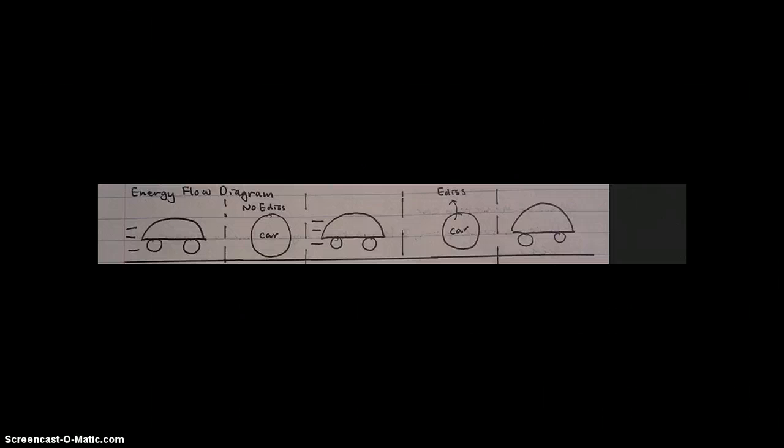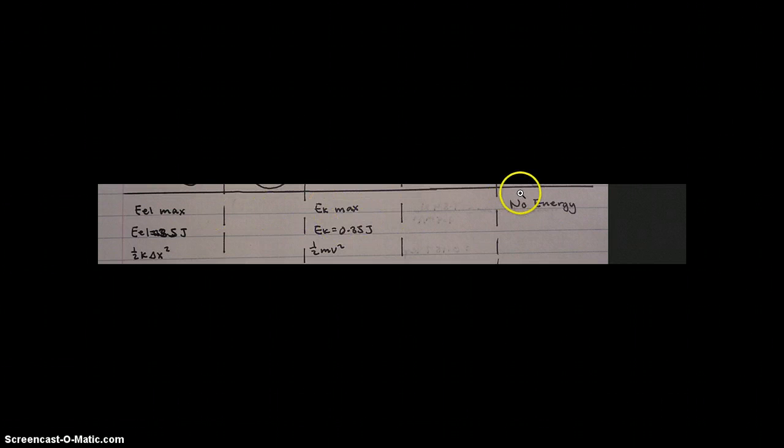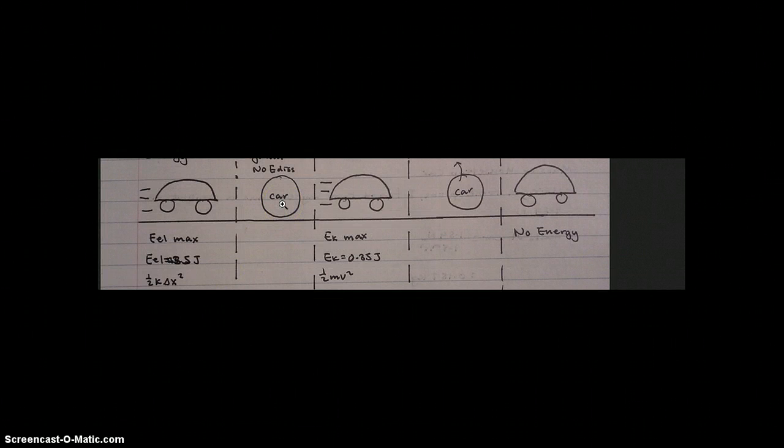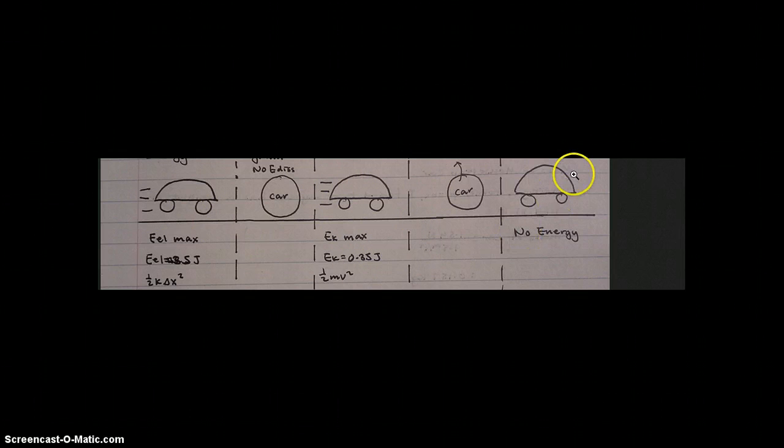So here is my energy flow diagram. The screencast-o-matic is having problems adjusting its range, so I have to move it down. Here's the energies of each respective point in time. Well now it's starting to work properly again. So this point is the point where the car is just about to start moving.